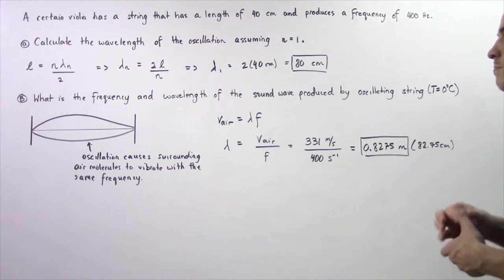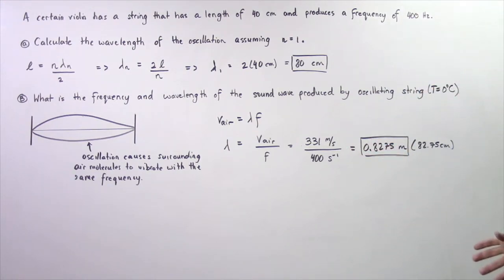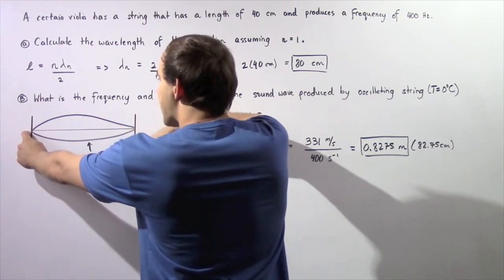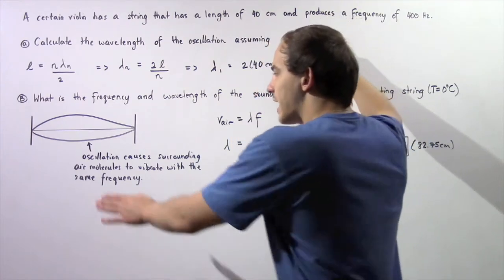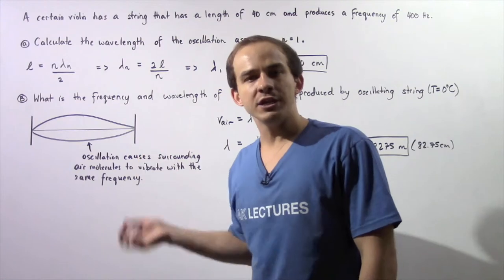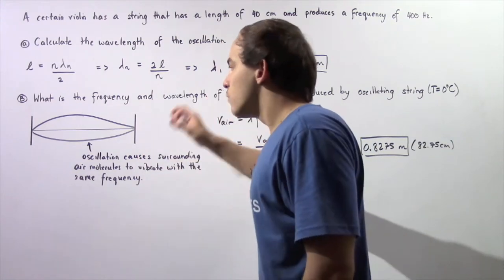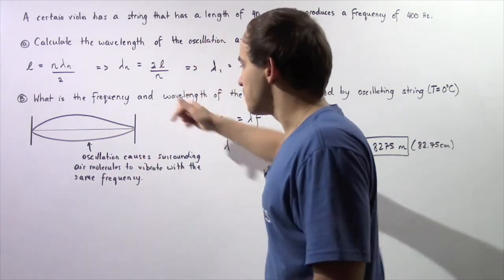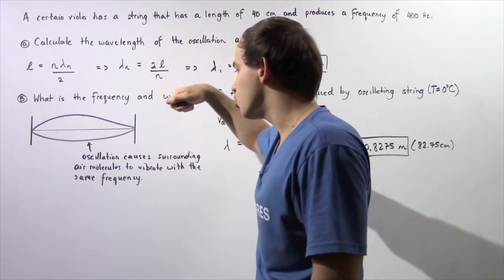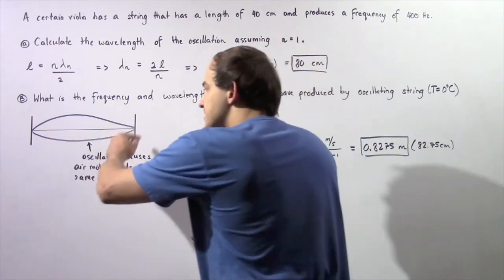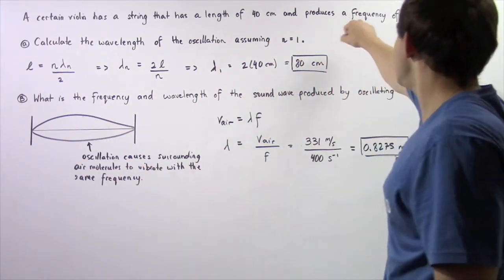Now let's move on to Part B, where we find the frequency and wavelength of the sound wave produced by our oscillating string. With n equal to 1, the standing wave diagram shows the fundamental mode. The standing wave vibrates with a certain frequency and forces the surrounding air molecules to vibrate with that same exact frequency. Therefore, the frequency of the sound wave produced is exactly 400 Hertz.